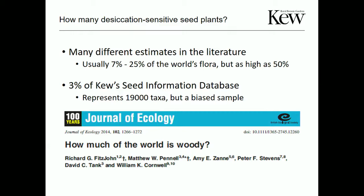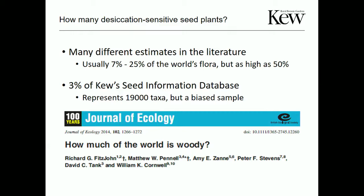We did this using two models: a hypergeometric model (sampling without replacement) and a binomial model (sampling with replacement). We then repeated these using habitat-based values instead of congeners — because the incidence of this trait strongly relates to species habitat.